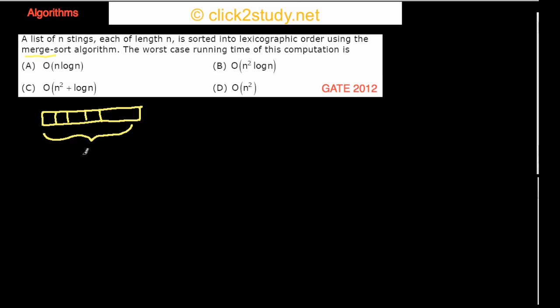This problem is from algorithms: a list of n strings, each of length n, is sorted into lexicographic order using the merge sort algorithm. We have to find the worst case running time. There are n strings, each of length n, and you have to sort these strings using the merge sort algorithm.